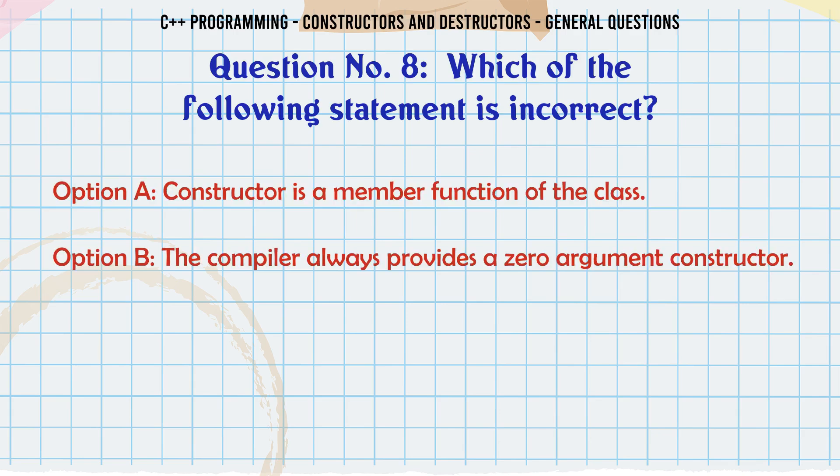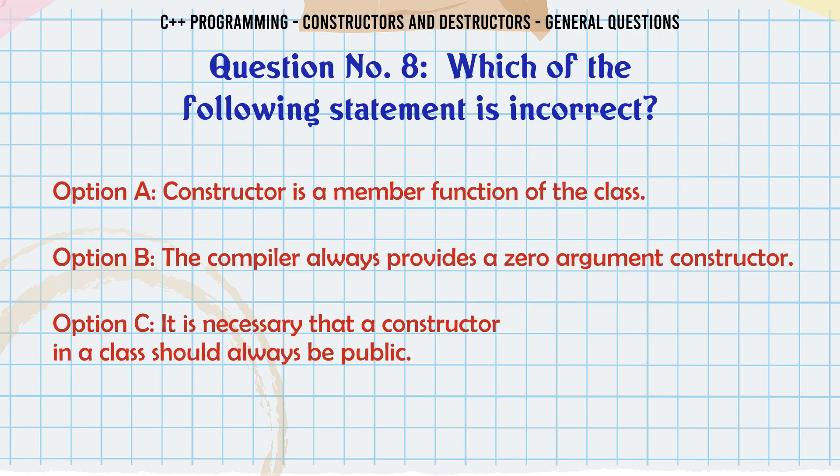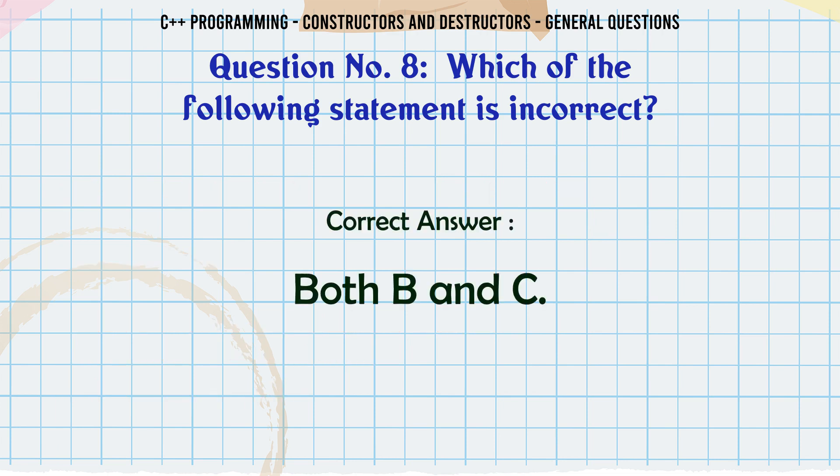Which of the following statements is incorrect? A. Constructor is a member function of the class. B. The compiler always provides a zero-argument constructor. C. It is necessary that a constructor in a class should always be public. D. Both B and C. The correct answer is Both B and C.